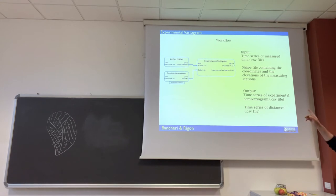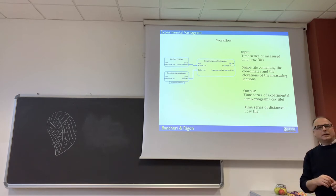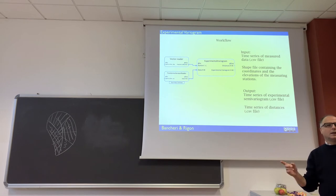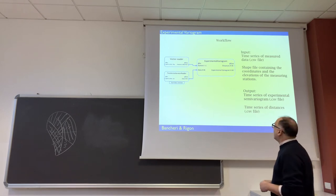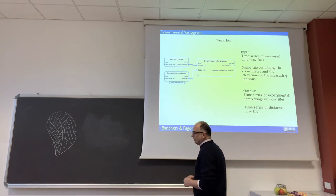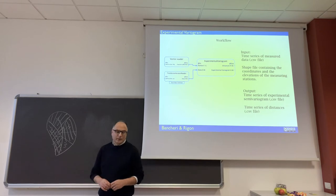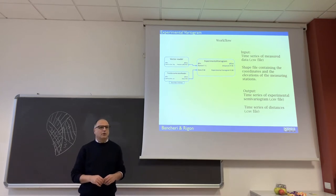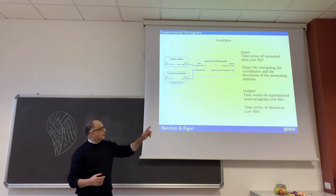And then you estimate the experimental semi-variogram. You just get a map with the distance in abscissa and in ordinate you have the distance and the values of the semi-variogram, the experimental semi-variogram, two different vectors, two outputs.